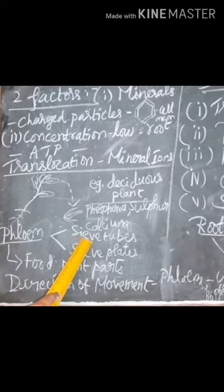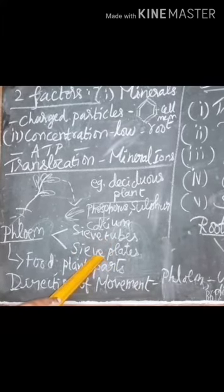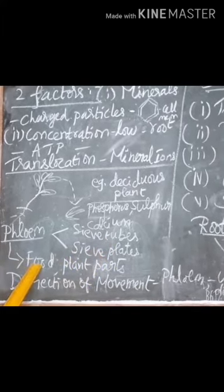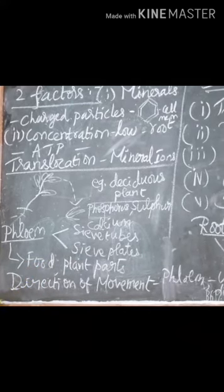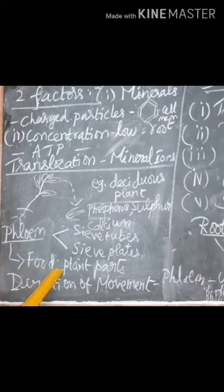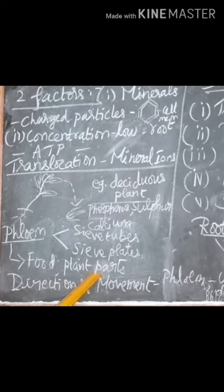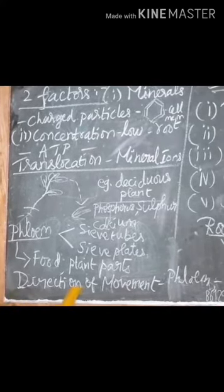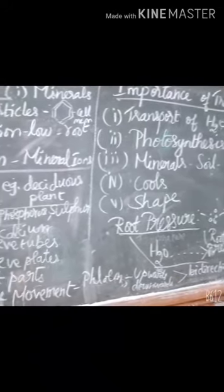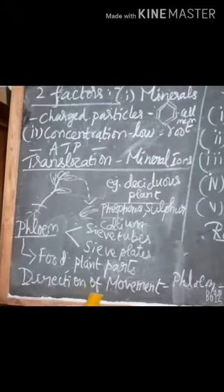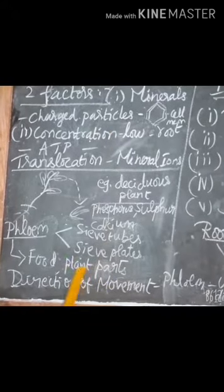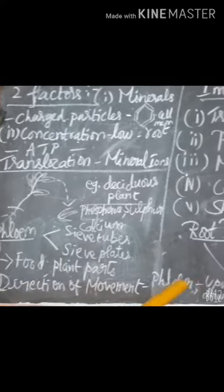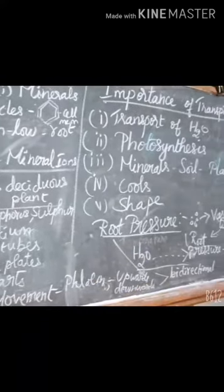Phloem transports food materials. The phloem tissue is composed of sieve tubes, and sieve tubes have sieve plates. Food reaches plant parts like leaves, buds, stem, and other parts of the plant. The direction of movement in phloem can be upward or downward, which is called bi-directional. Xylem movement is only upward, but phloem movement is bidirectional.